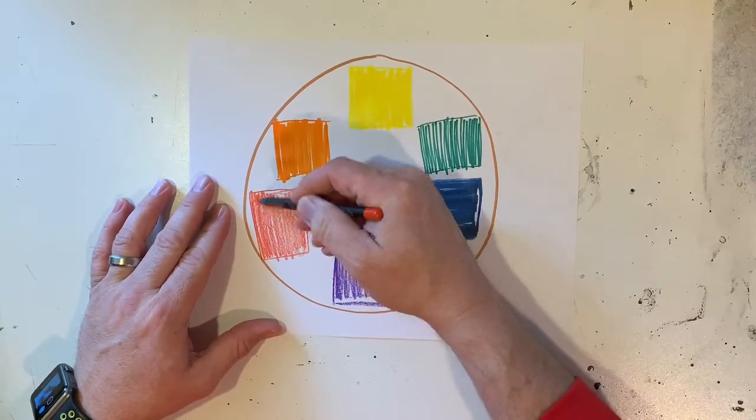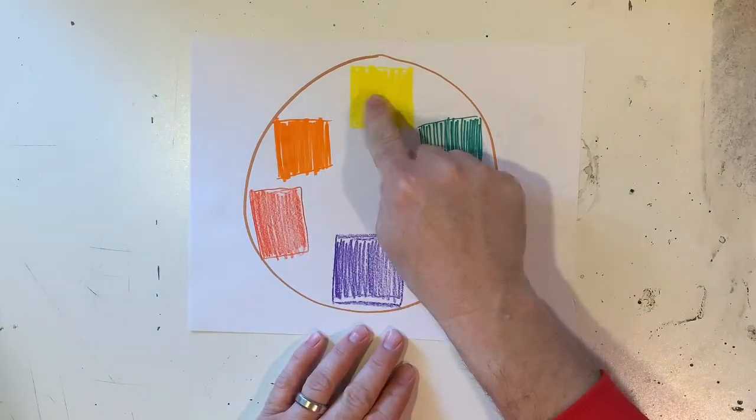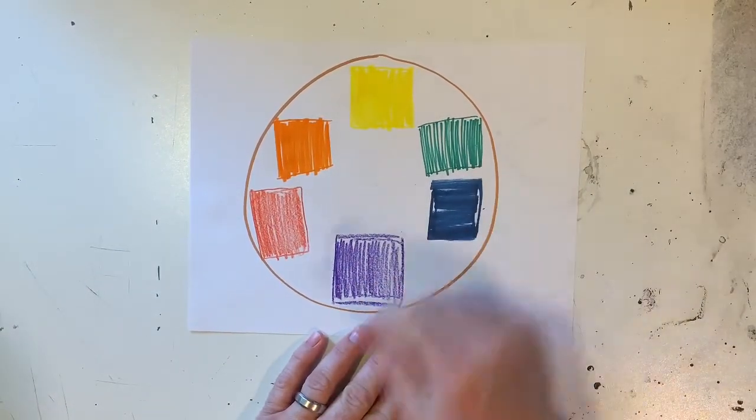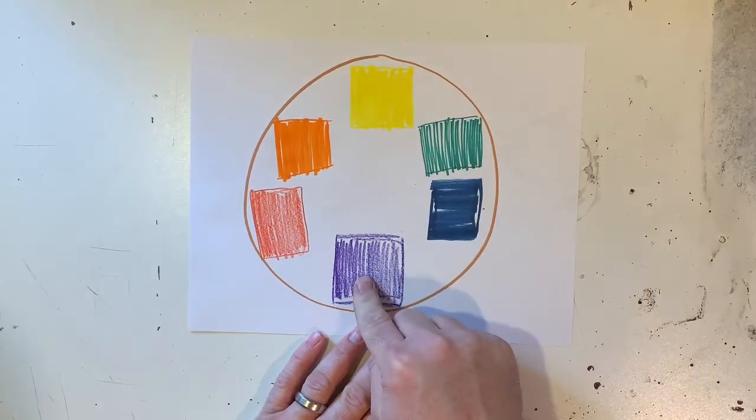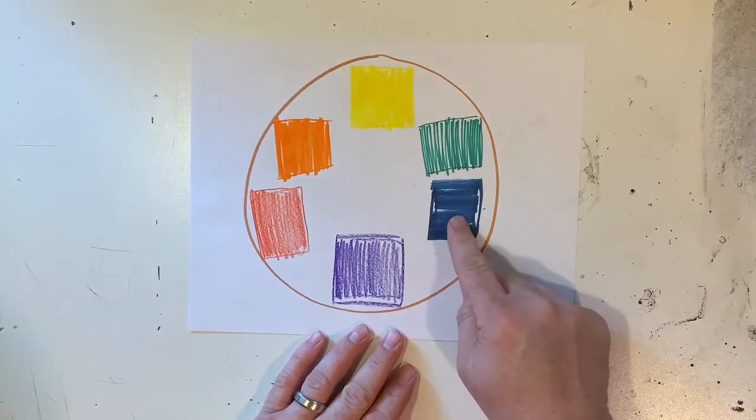So now if we look at our color wheel, we might start recognizing some things. We can recognize that we got our warm colors on this side, we got our cool colors on this side. We got our complements across from each other: yellow and purple are complements, orange and blue are complements, and red and green are complements.